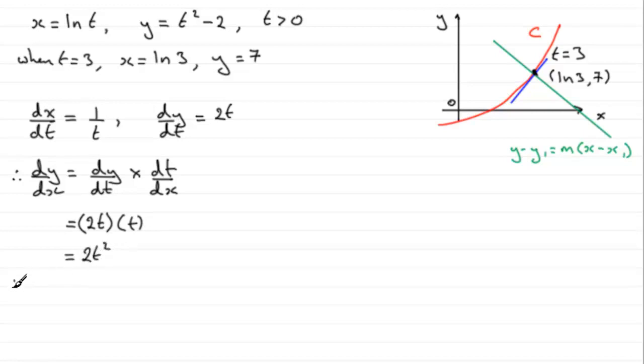So when t equals 3, we can work out now what dy by dx is. And so that's going to be 2 times 3 squared, 2 times 9, which is 18. So that's the gradient of our tangent then, at the point where t equals 3.